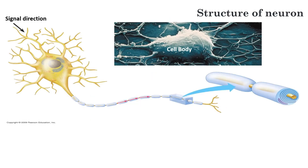Now let's look at the structure of a neuron. The largest portion of the neuron is the cell body, also called the soma. This is where the nucleus can be found. Like other cells, the cell body contains usual organelles such as ribosomes, endoplasmic reticulum, mitochondria, microtubules, and neurofibrils.